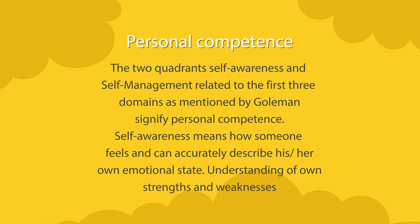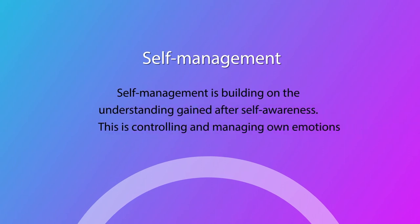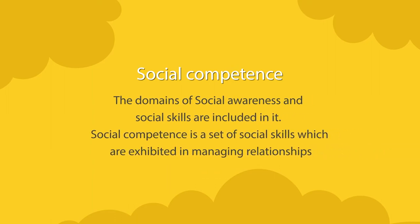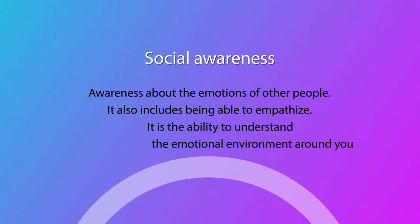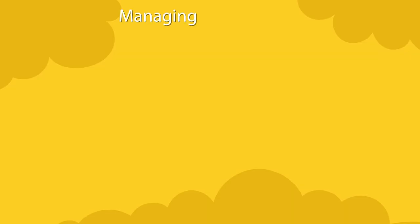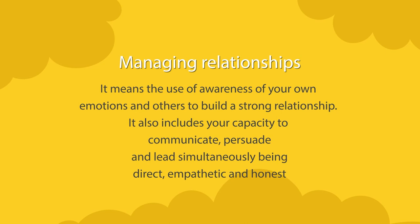The areas of emotional competence related to these domains are: personal competence, which includes self-awareness and self-management. Self-awareness means how someone can accurately describe his or her own emotional state and understand their own strengths and weaknesses. Self-management is controlling and managing one's own emotions, building on self-awareness. Social competence includes social awareness and social skills — being aware of the emotions of other people, including the ability to empathize and understand the emotional environment around you.